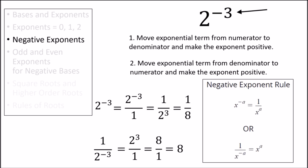Here is a shorthand way to express the negative exponent rule in math terms. Basically, it tells us to switch the exponential term from the numerator to the denominator, or vice versa, and we can make the exponent positive.